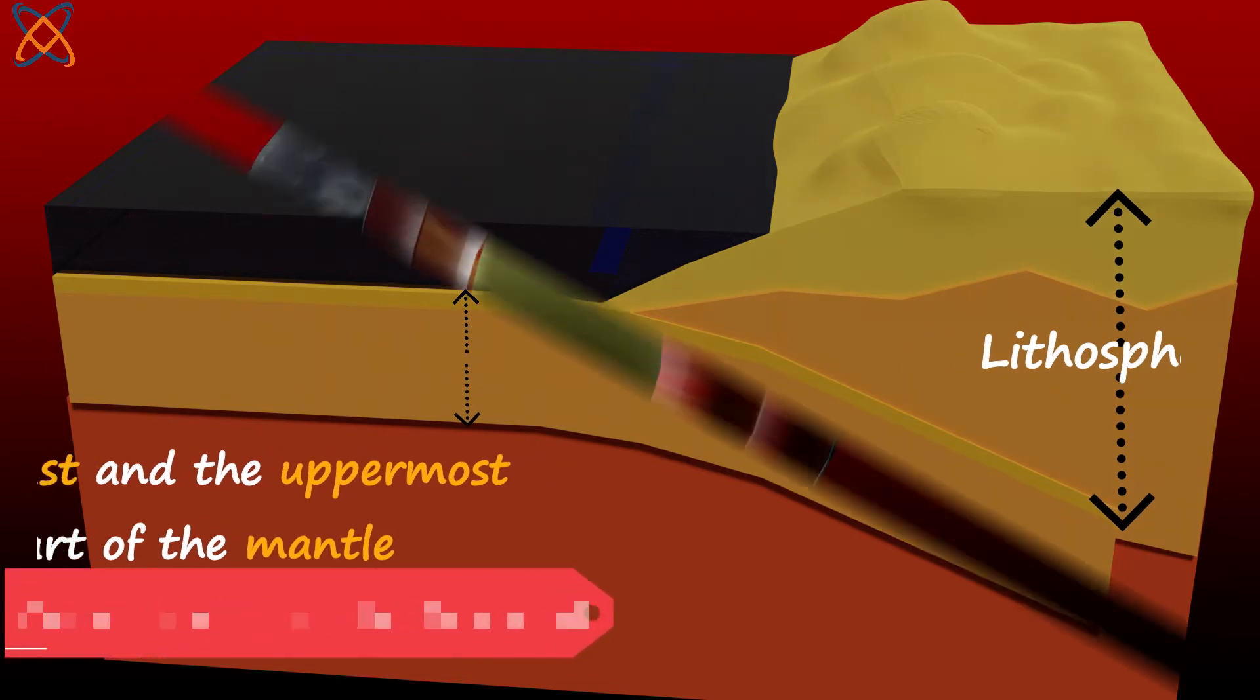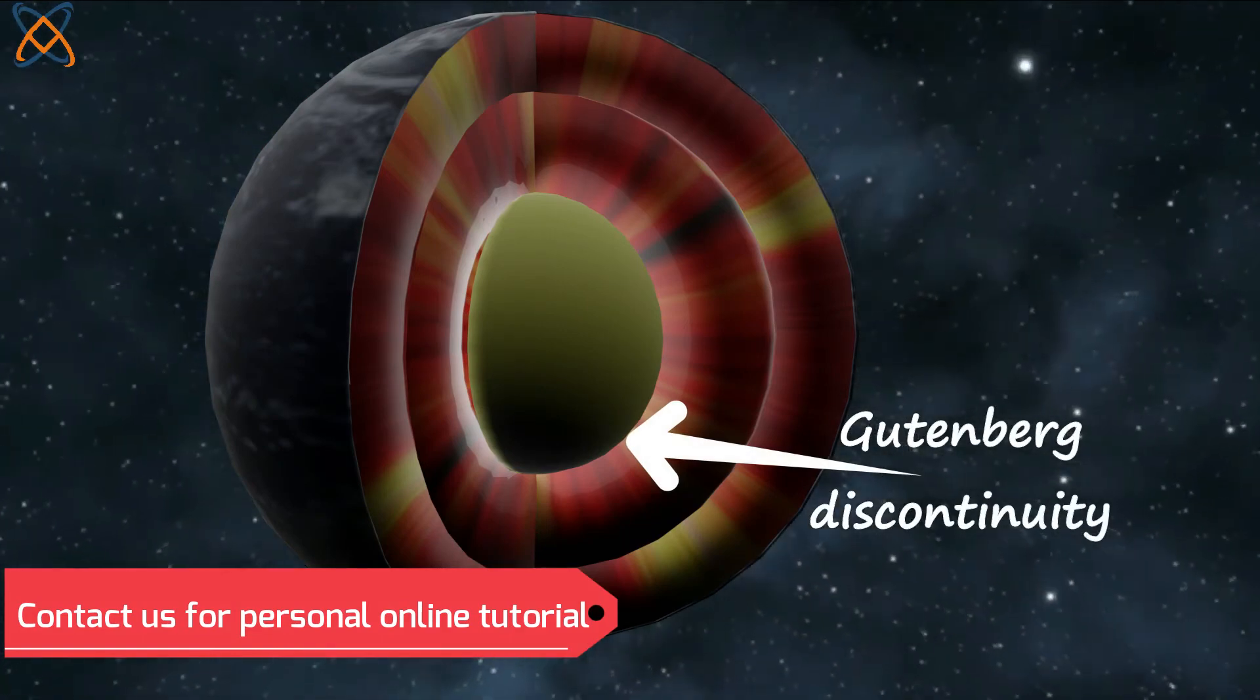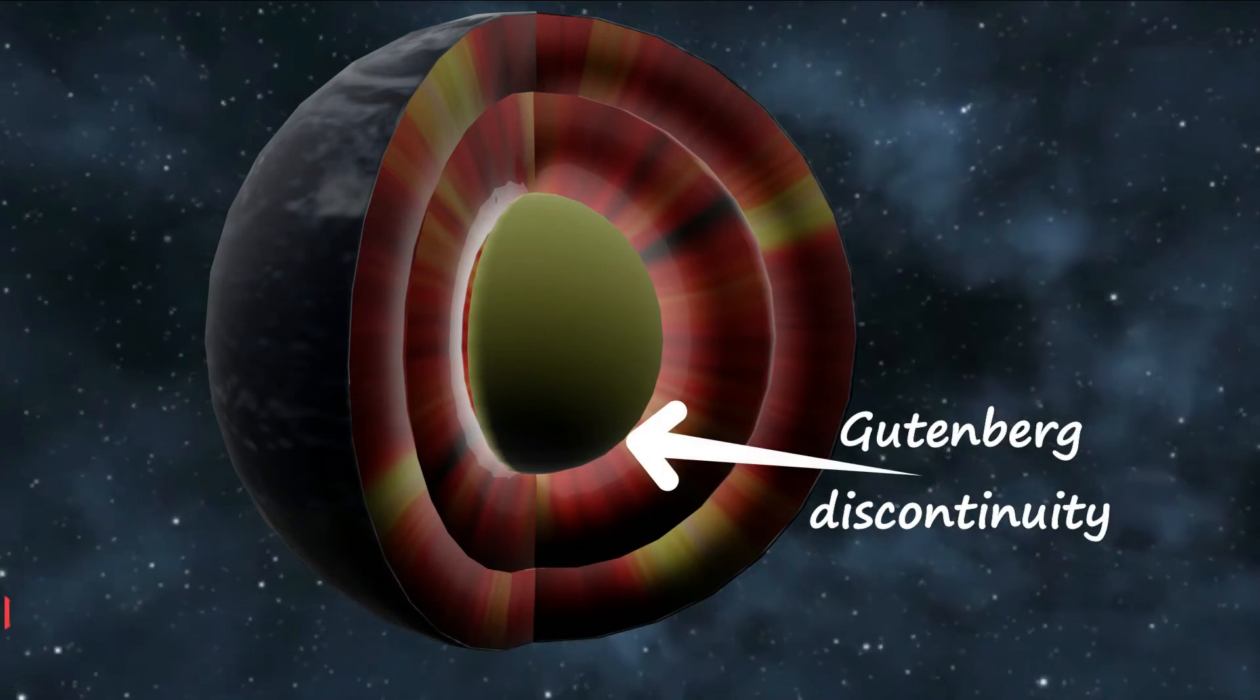Now to the innermost part of the Earth, which is the core. Gutenberg discontinuity separates the mantle and the core.